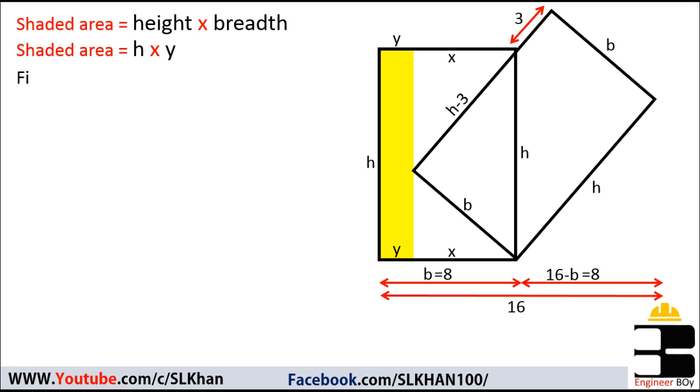Now let's determine the height of the same rectangle, which can be found with the help of that inclined rectangle. As you can see, this triangle is a right angle triangle for which we can say, of course, (h - 3)² + b² = h², which is the Pythagorean theorem.